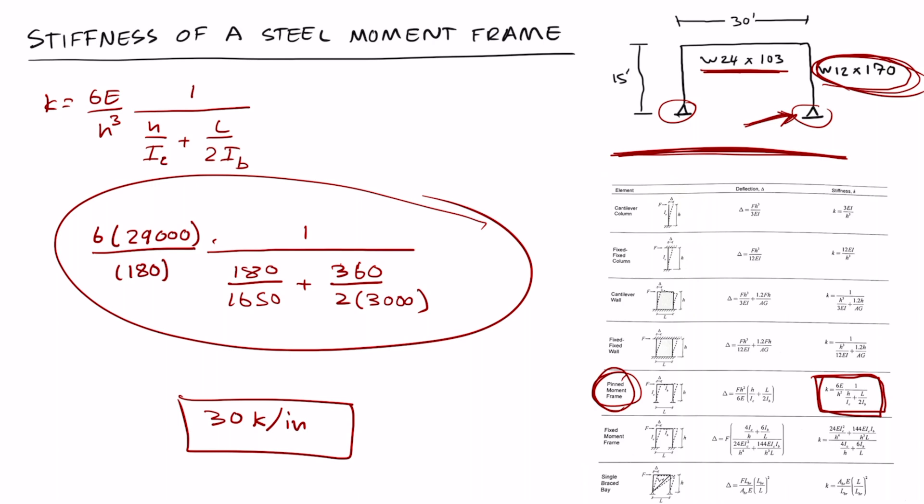Steel moment frames are inherently inefficient for providing stiffness and require more material than other seismic force-resisting systems. Steel moment frames are inherently less stiff than concrete and that kind of makes sense intuitively.